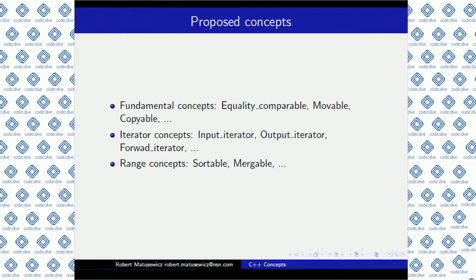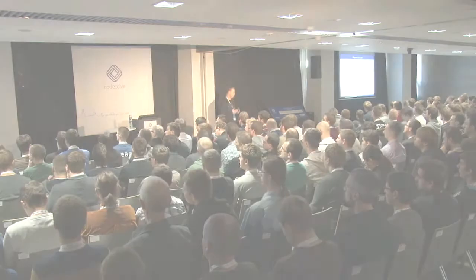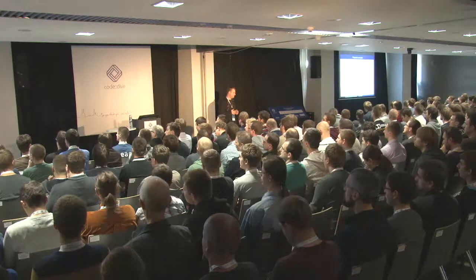There are also researchers trying to identify what concepts we already have in the standard library and write implementations of them. Some fundamental concepts being proposed include EqualityComparable, Movable, and Copyable. Iterator concepts include whether an iterator is an input iterator or output iterator. Programmers are also proposing concepts for ranges, such as whether a range is Sortable or Mergeable.